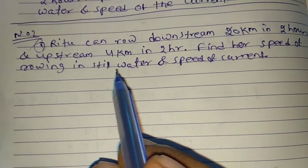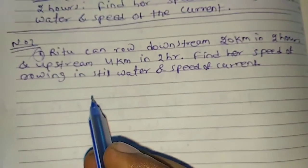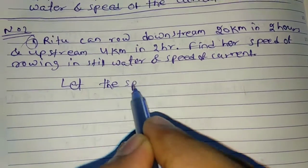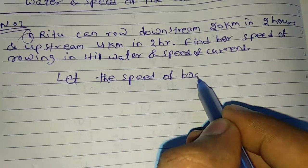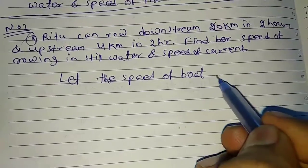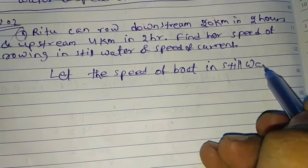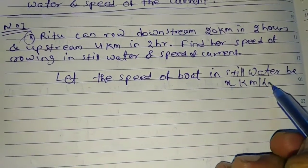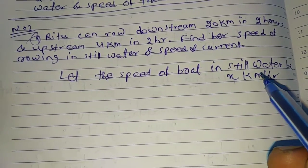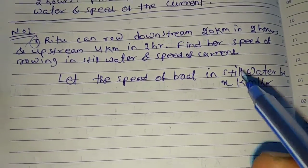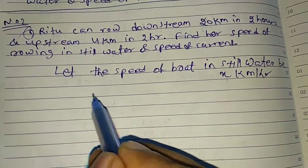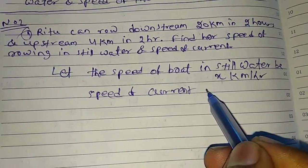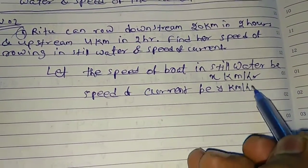First, we have to take the speed of boat. Let the speed of boat in still water be x km per hour. You have to write the unit. Speed of current be y km per hour.